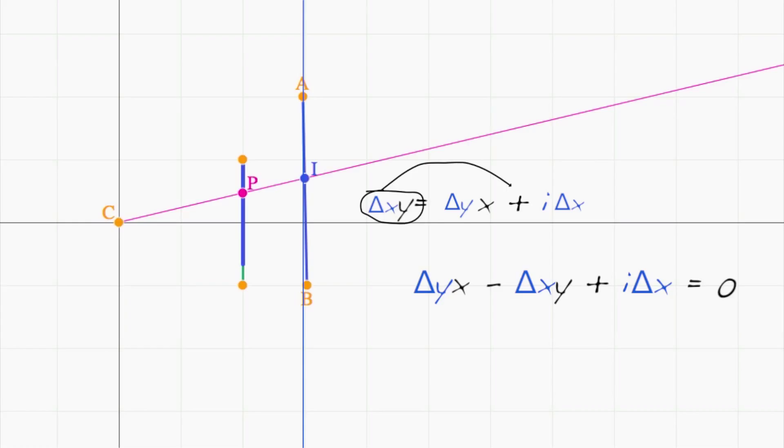Call this term change in y a value a, this term negative change in x a value b, and this term i times change of x a value c. Meaning we can write an equation for the line as ax plus by plus c equals zero.